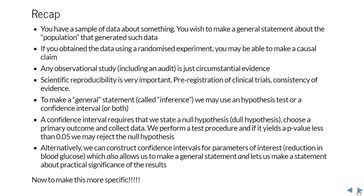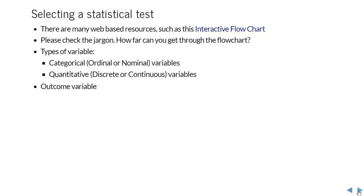Alternatively, you can construct confidence intervals for parameters of interest, for example, reduction of blood glucose once patients are on a particular treatment. That also allows you to make this general statement, but in addition it lets you make a statement about the practical significance of the results—not just that there is something statistically significant, but that there is practical interest in those results.